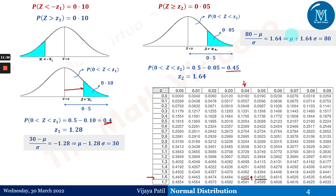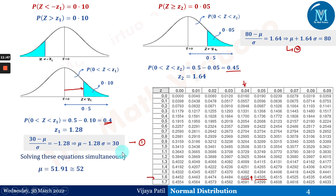Solving equations (1) and (2) simultaneously, we get mu ≈ 51.91, which approximates to 52, and sigma = 17.12. So the mean of the distribution is approximately 52 and the standard deviation is 17.12.